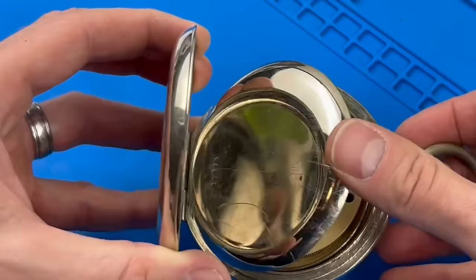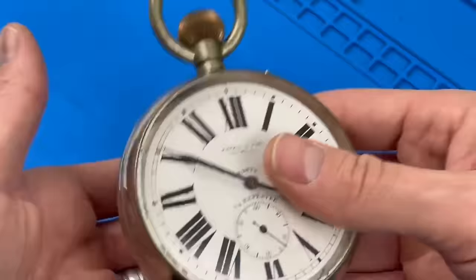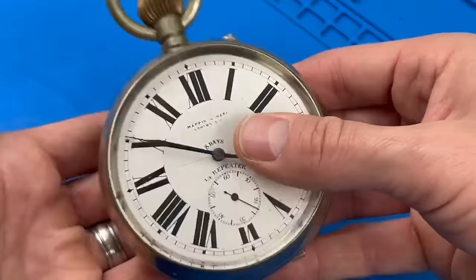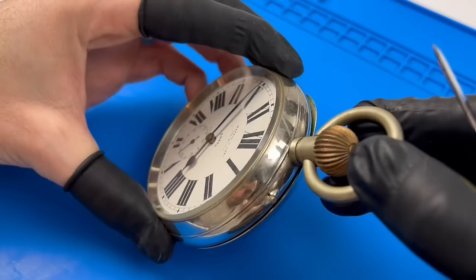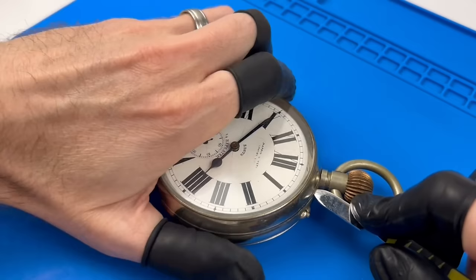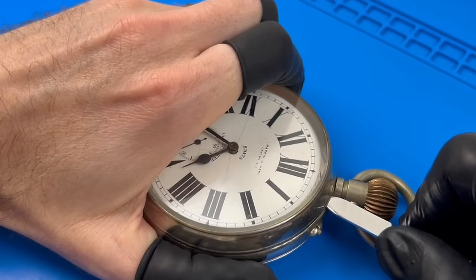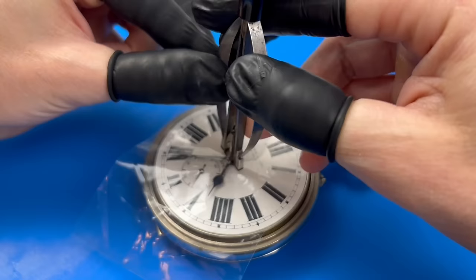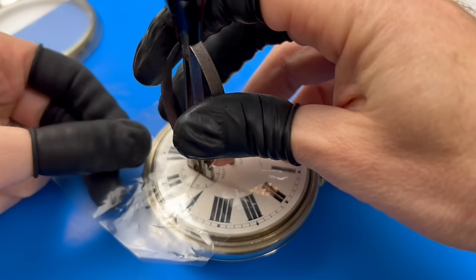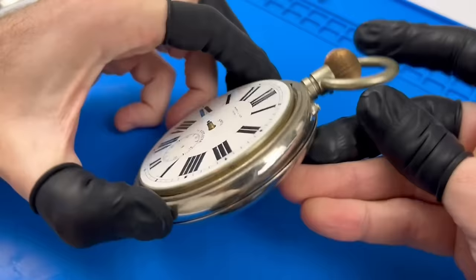Nothing about this watch is working. I can't set the time, I can't initiate the repeat mechanism, and I can't wind it either. What the heck was that? That's not a sound anyone wants to hear. It appears as if the train just released all its power upon simply removing the bezel.